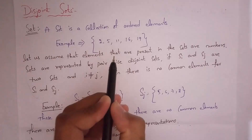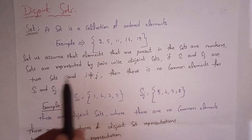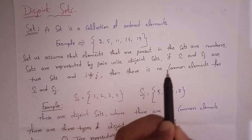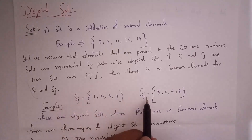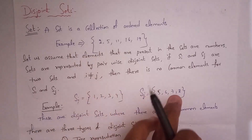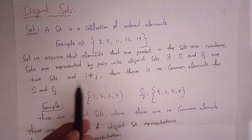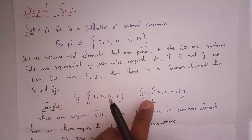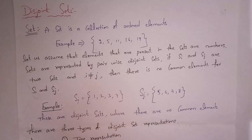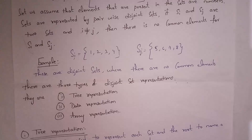Let us assume the elements present in the sets are numbers. Sets are represented by pairwise disjoint sets. If Si and Sj are two sets and i is not equal to j, then there is no common element between Si and Sj. For example, Si contains {1, 2, 3, 4} and Sj contains {5, 6, 7, 8}, so there are no common elements. We call Si and Sj disjoint sets.